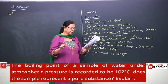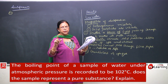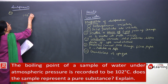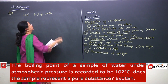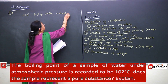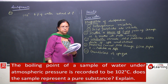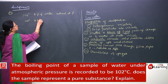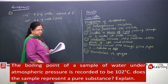The boiling point given is 102 degrees under normal atmospheric pressure. We know that the boiling point of pure water is 100 degrees. So what is asked — does the sample represent a pure substance?